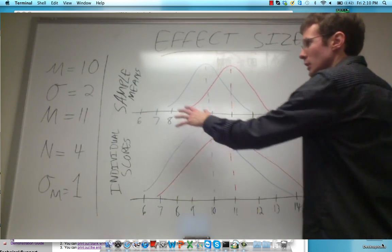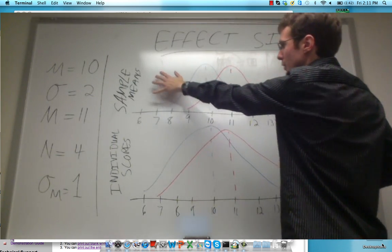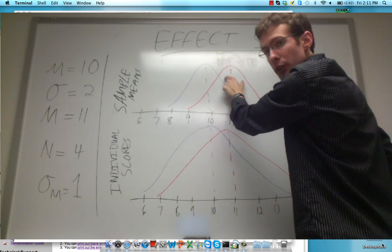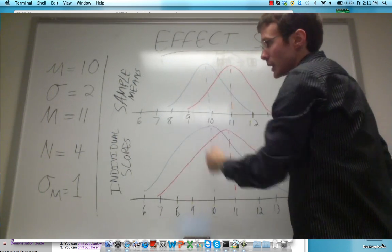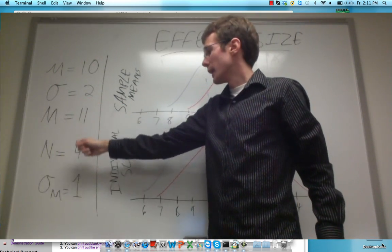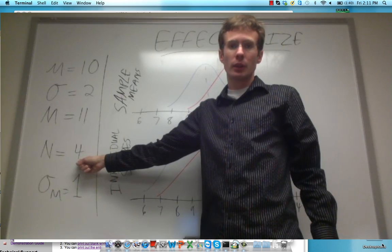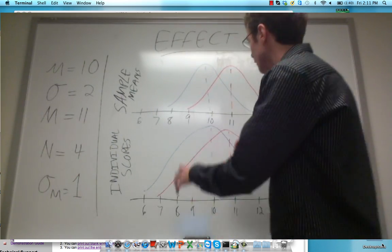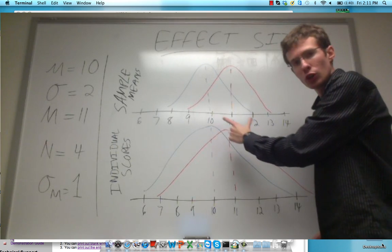To illustrate this, look at this distribution of sample means with blue showing the null distribution and red showing the alternative distribution. In this case, let's say that my population standard deviation was 2 and I had a sample of size 4. Therefore, the resulting standard error would be 1 and the spread of those two distributions would look like this.